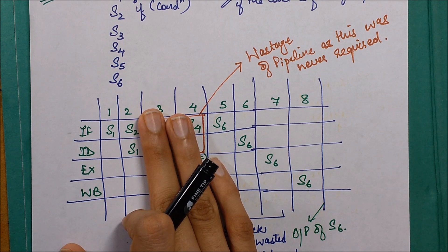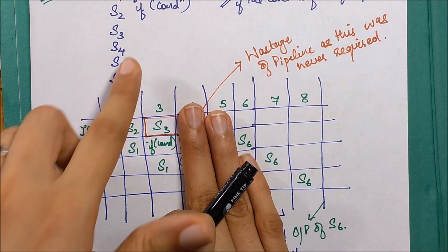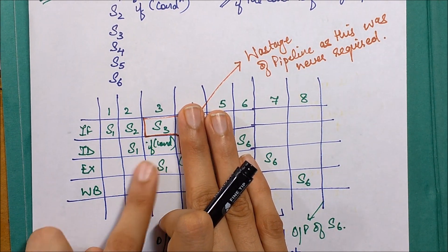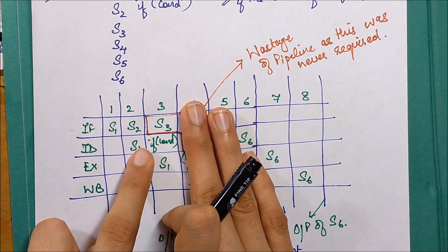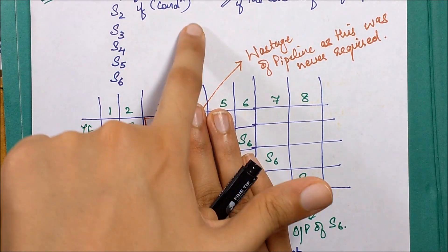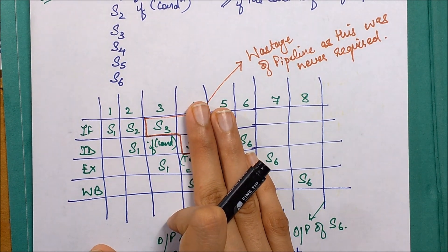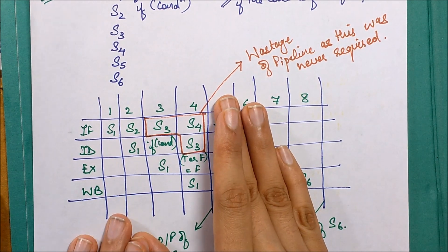Similarly in the third clock pulse we fetch S3, start the ID phase of S2, and execution phase of S1. So ID phase of S2 is if condition, so we write it down. In the next phase we fetch S4.